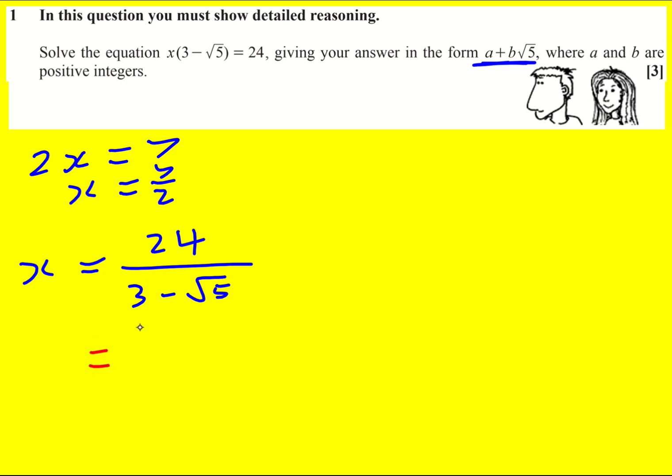So what I can do is I can just write it out again. I can multiply through by 3 plus root 5. Basically it's the same thing, but I just change the sign around. I have to times top and bottom by this, so I'm not actually changing the fraction.